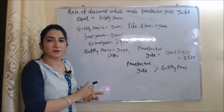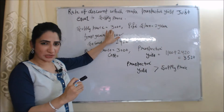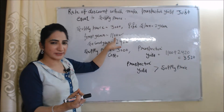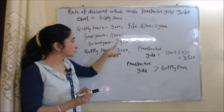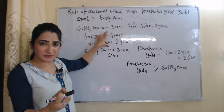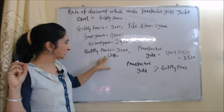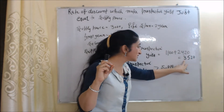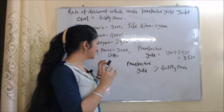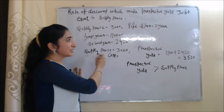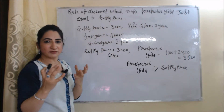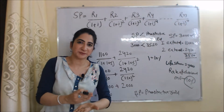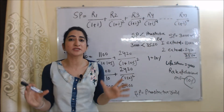Suppose we buy one machine and the supply price of the machine is 3,000, and the lifespan of the machine is two years. The first year we expect to receive income of 1,100, and the second year we expect to receive 2,420. Our two years' expected income is our prospective yield, which equals 3,520. You can see our prospective yield is more than the supply price. Marginal efficiency of capital is the rate of discount which makes prospective yield just equal to supply price.